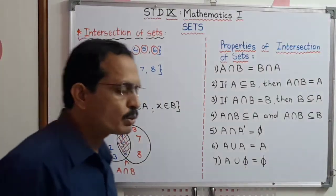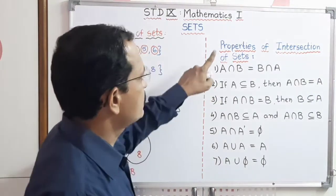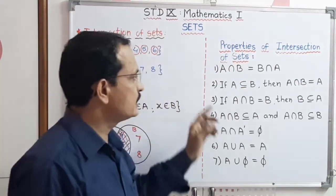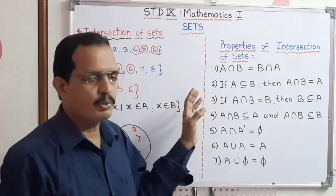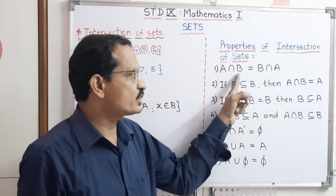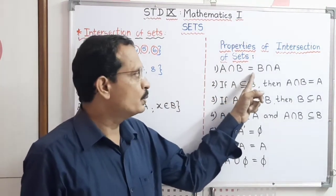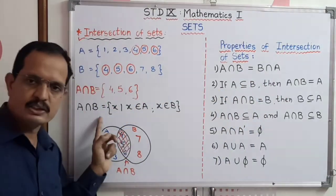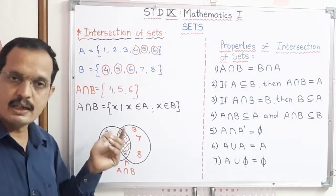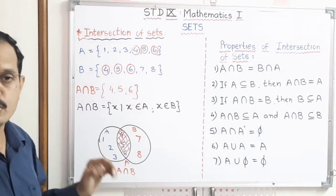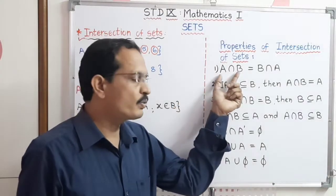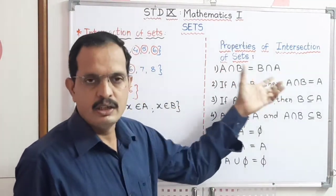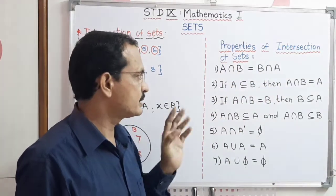Now we learn some properties of intersection of sets. The first property is: A intersection B equals B intersection A. That means if we write A intersection B or B intersection A, both are the same. Instead of writing A intersection B, if we write B intersection A, it doesn't make any difference.